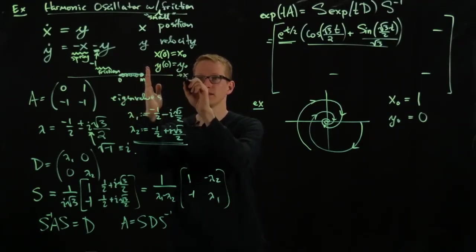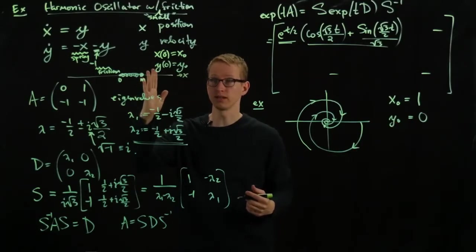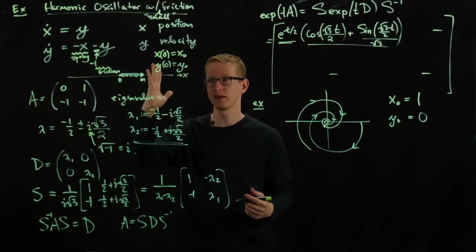This is the x-axis, let's say. And y0 equals 0 means I let go, so I don't kick it. So I let go of this mass, and then it oscillates.